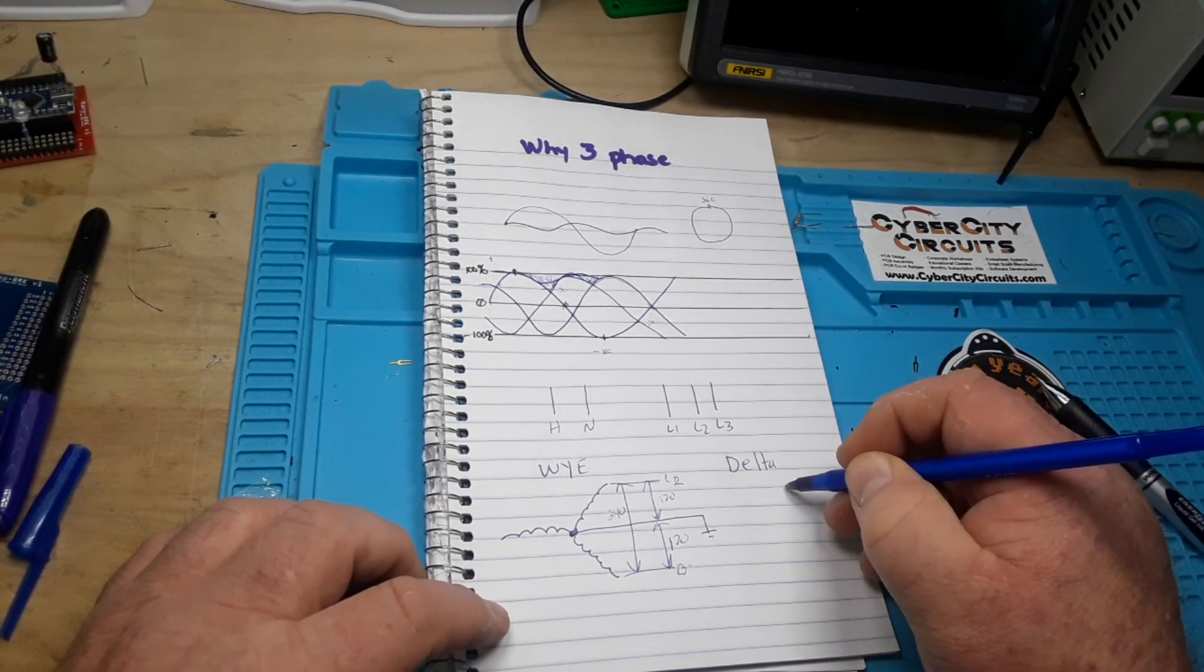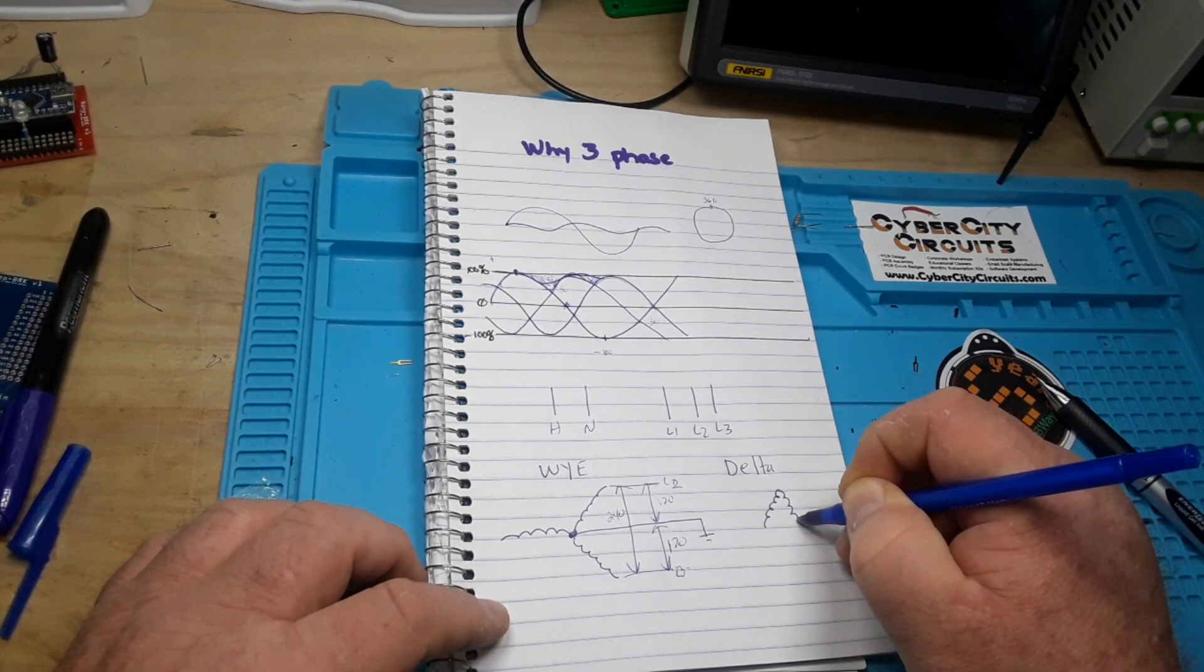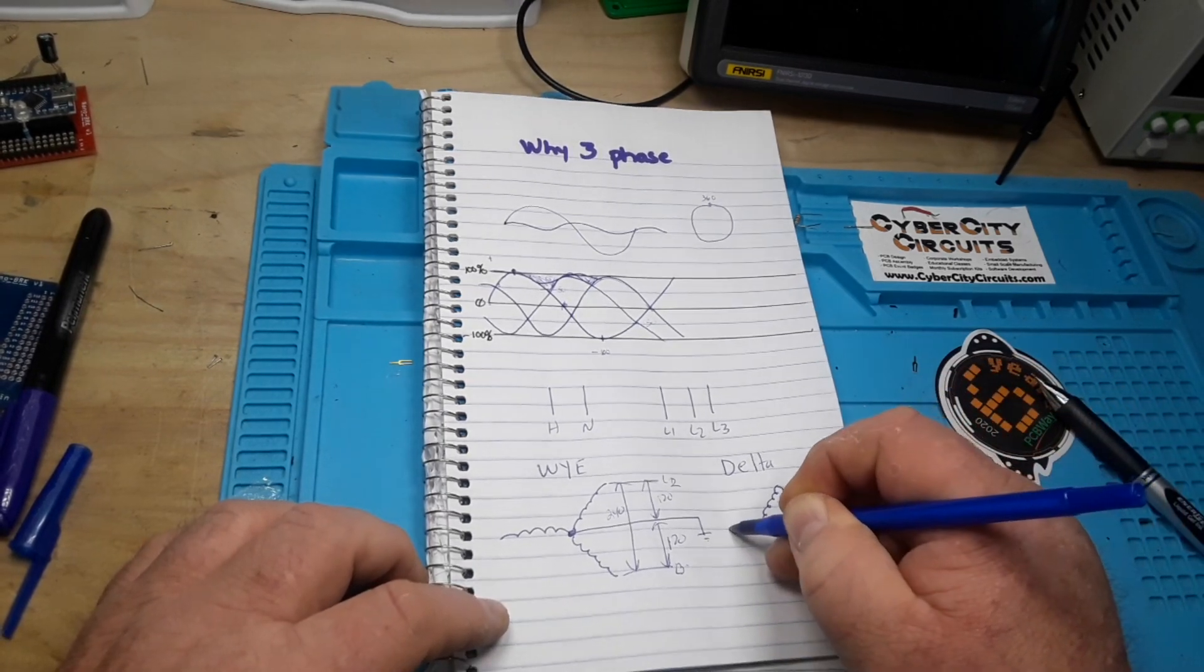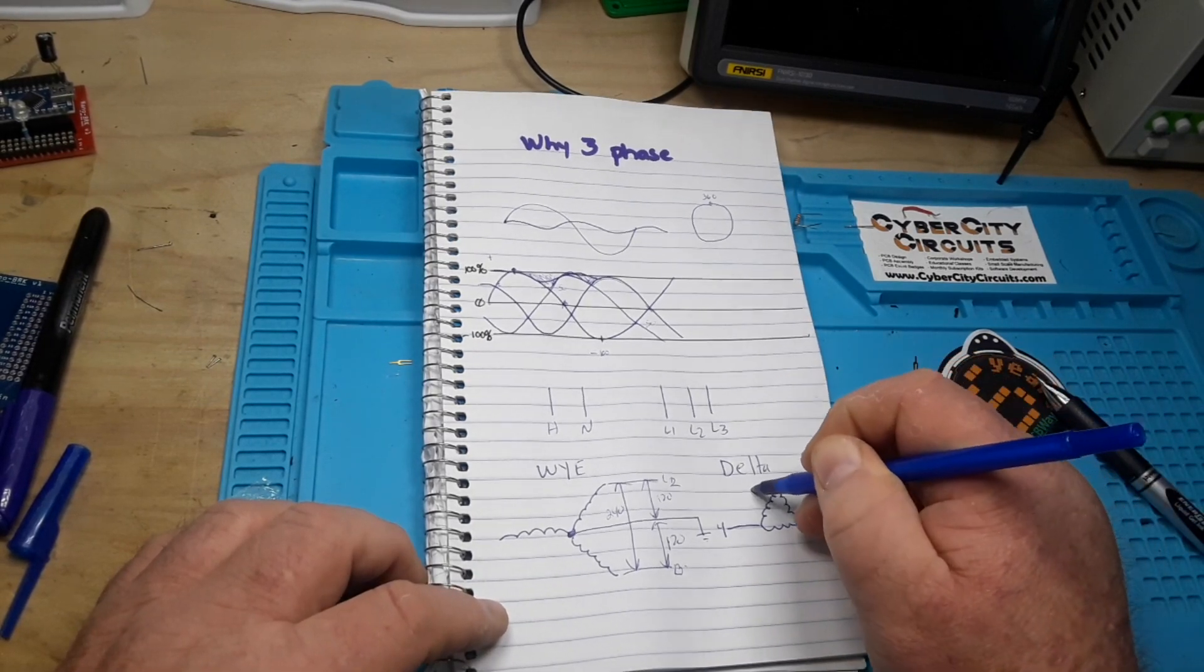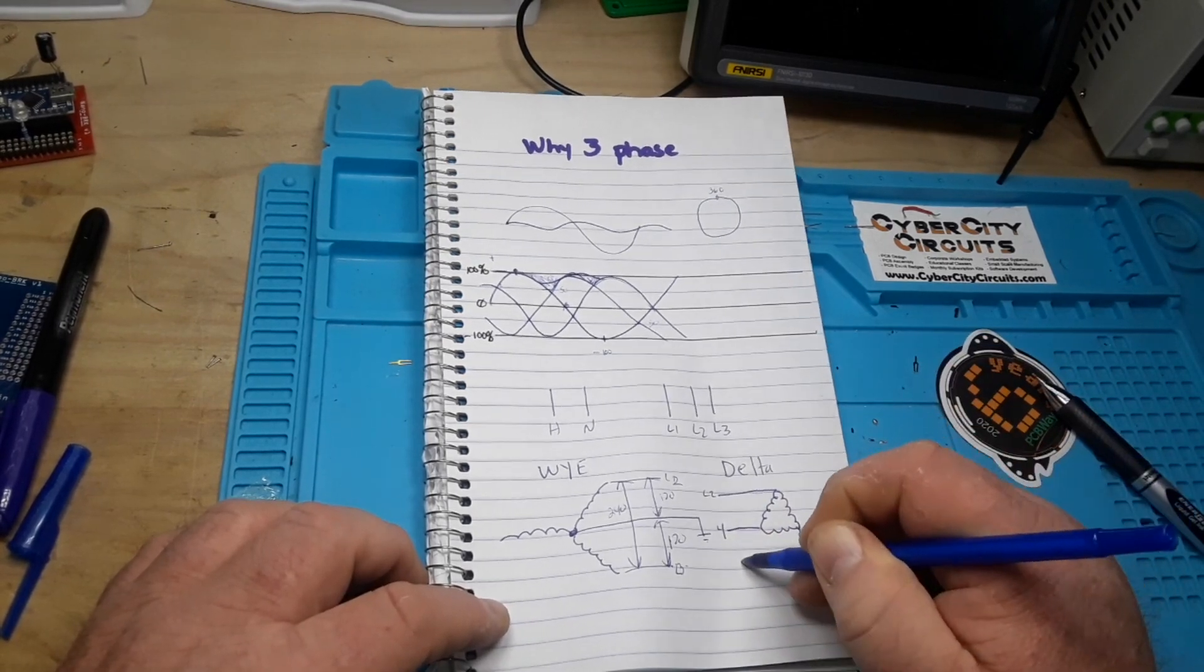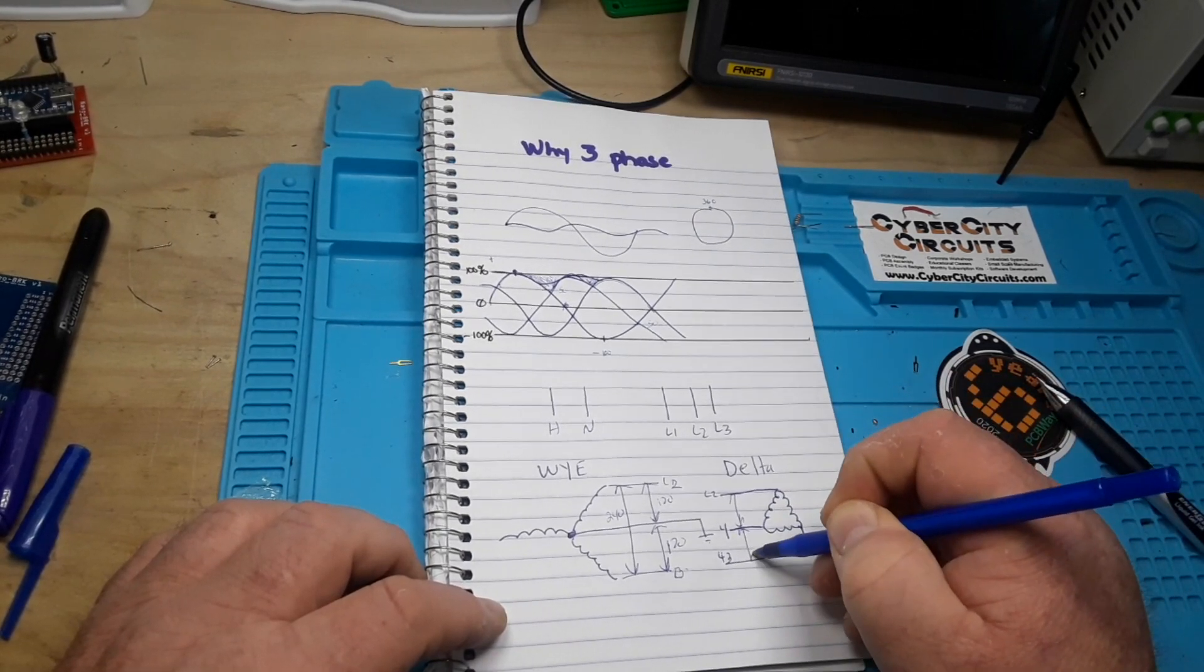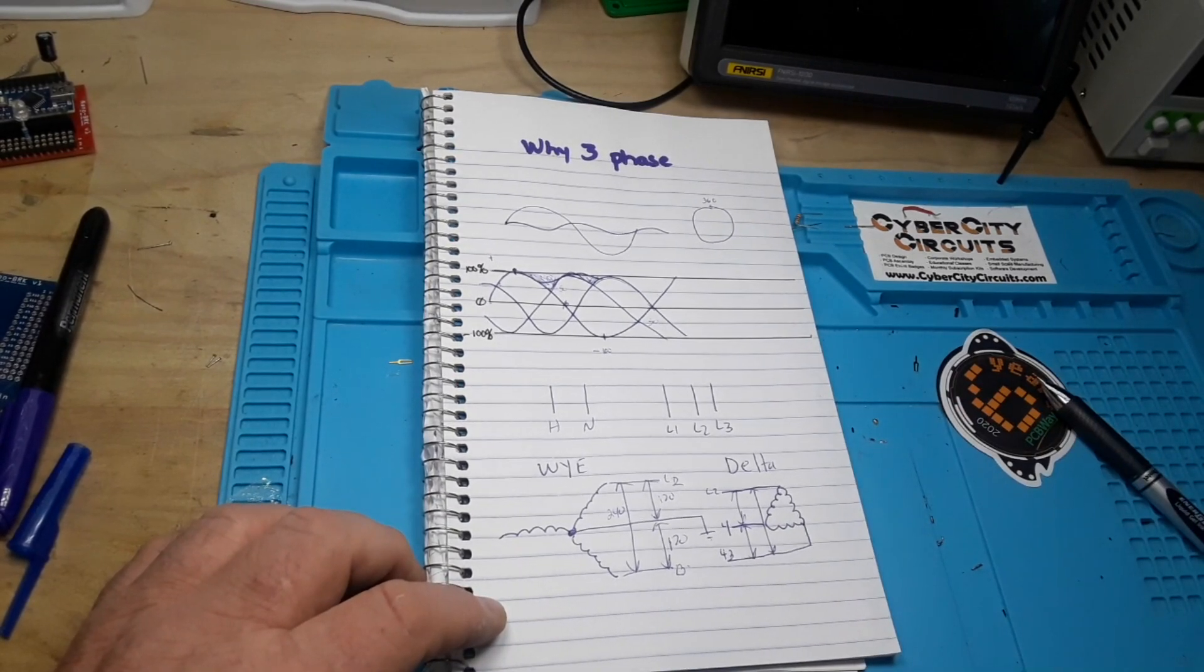The other way to hook it up is called the Delta, and it looks something like this, where this is your L1, this is your L2, and this is your L3. Basically the same thing. You get the half-point power here, half-point power here, full-point power between all three legs.